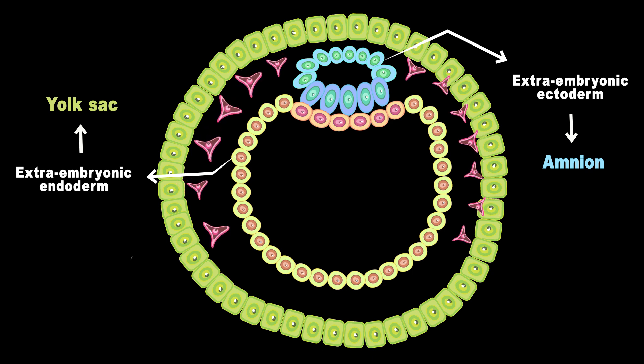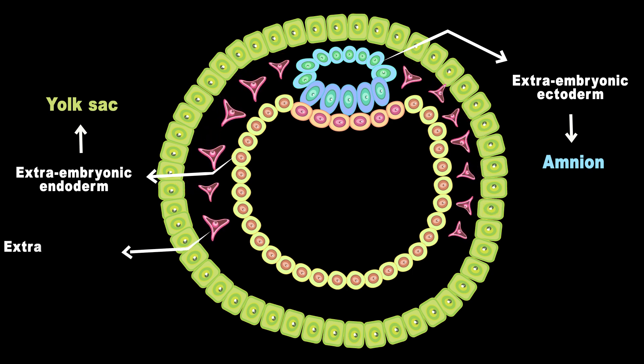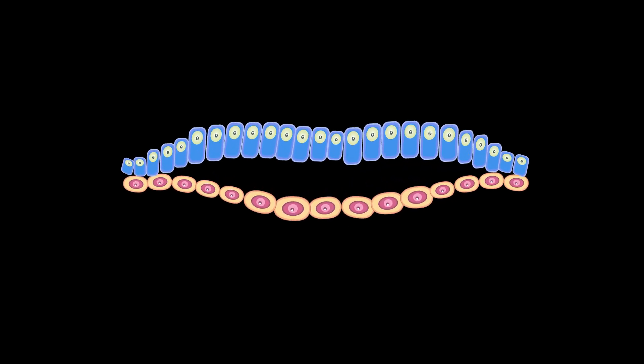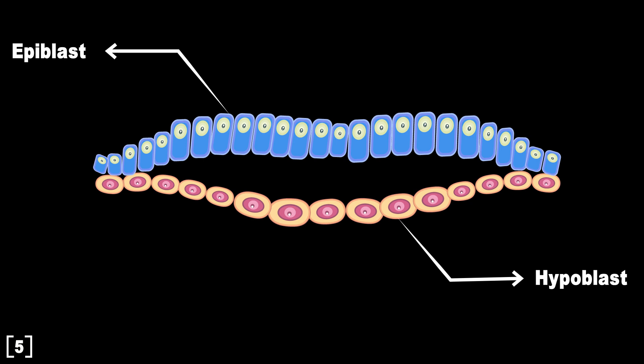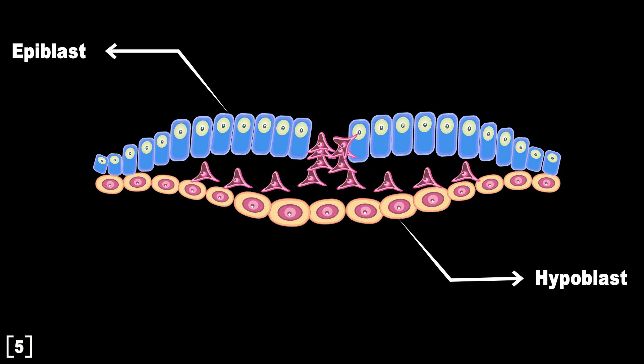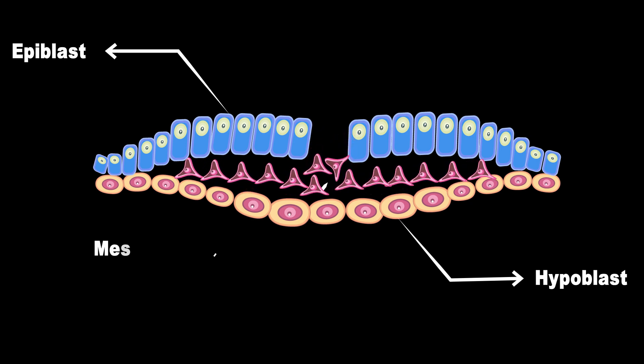The other one is extraembryonic mesoderm. But before it starts to emerge, the epiblast cells go through a transition called EMT, or epithelial-to-mesenchymal transition. This transition changes the properties of the epiblast cells and they start to migrate downward to make a new layer. This movement creates a temporary structure called the primitive streak. If you look at these structures from the top, it would be like this.